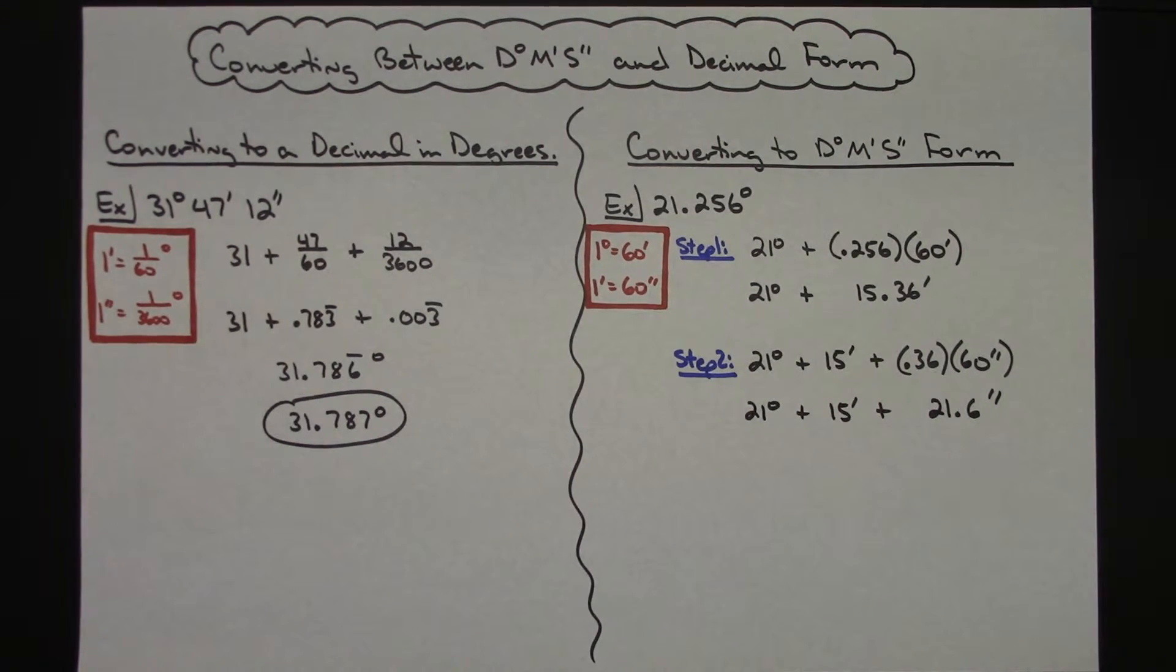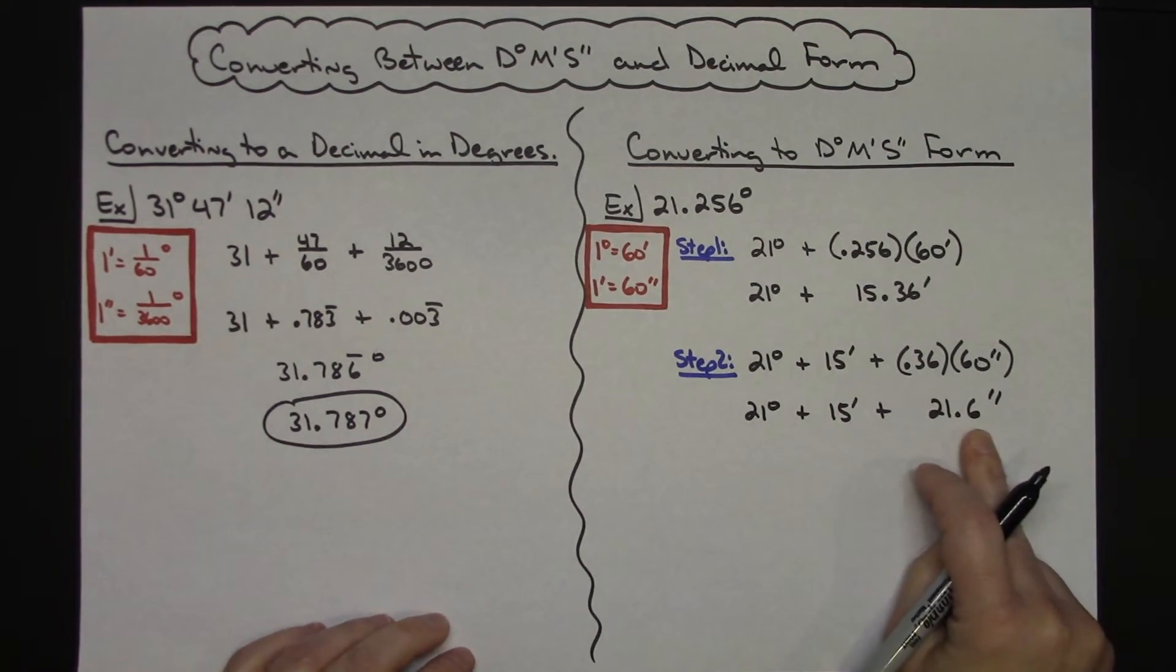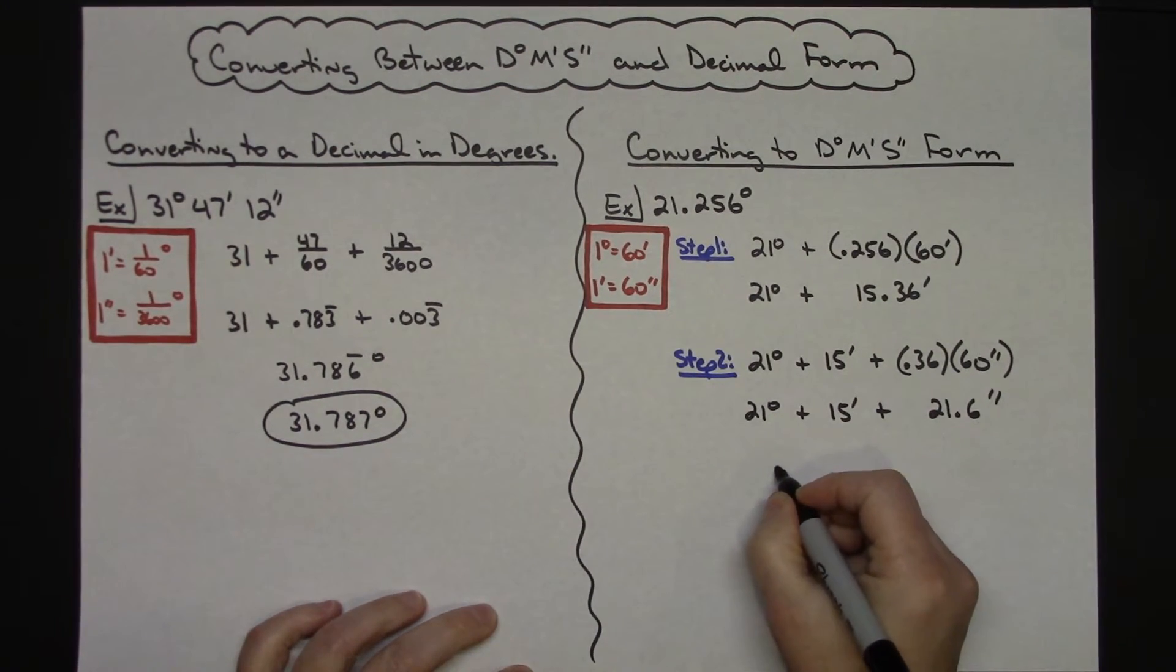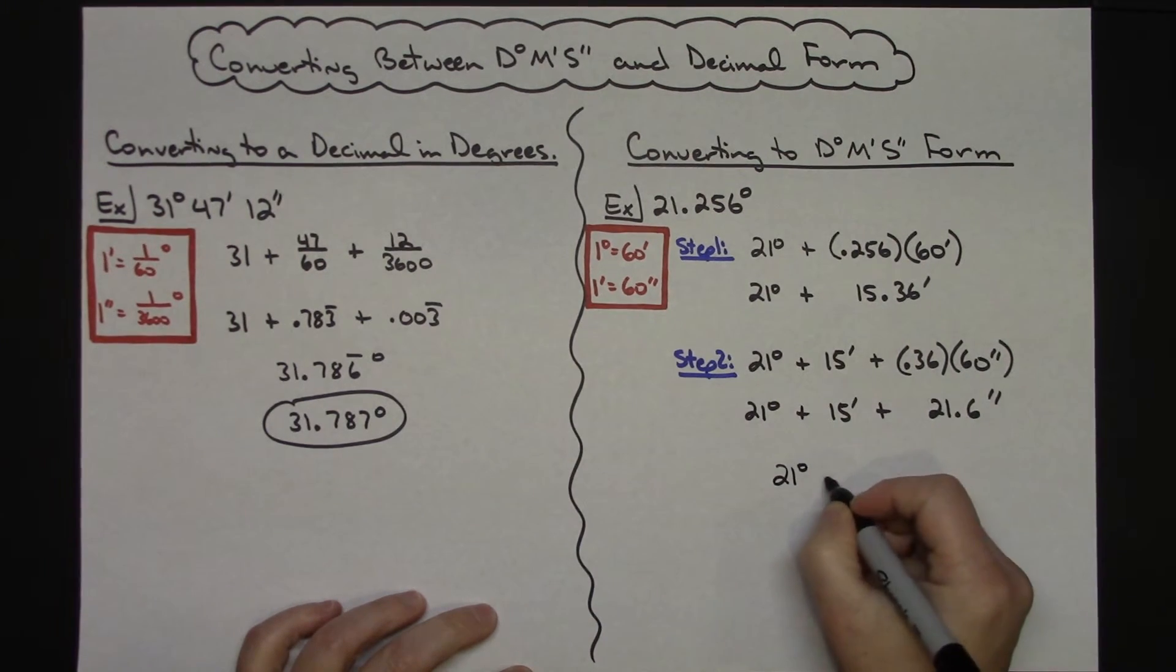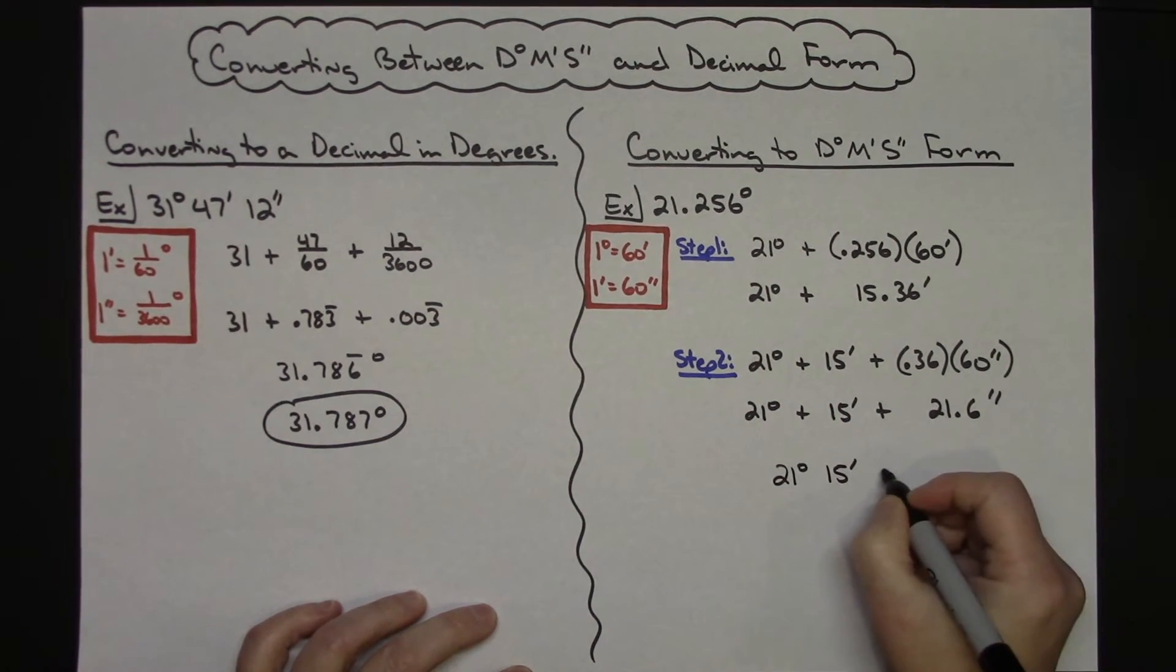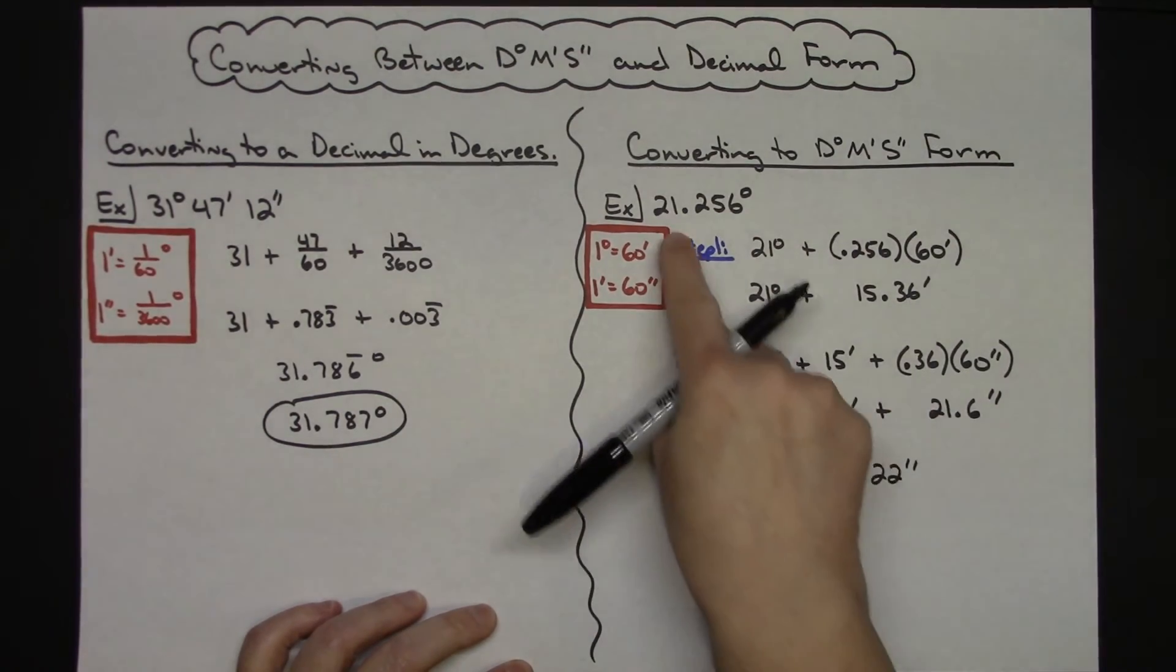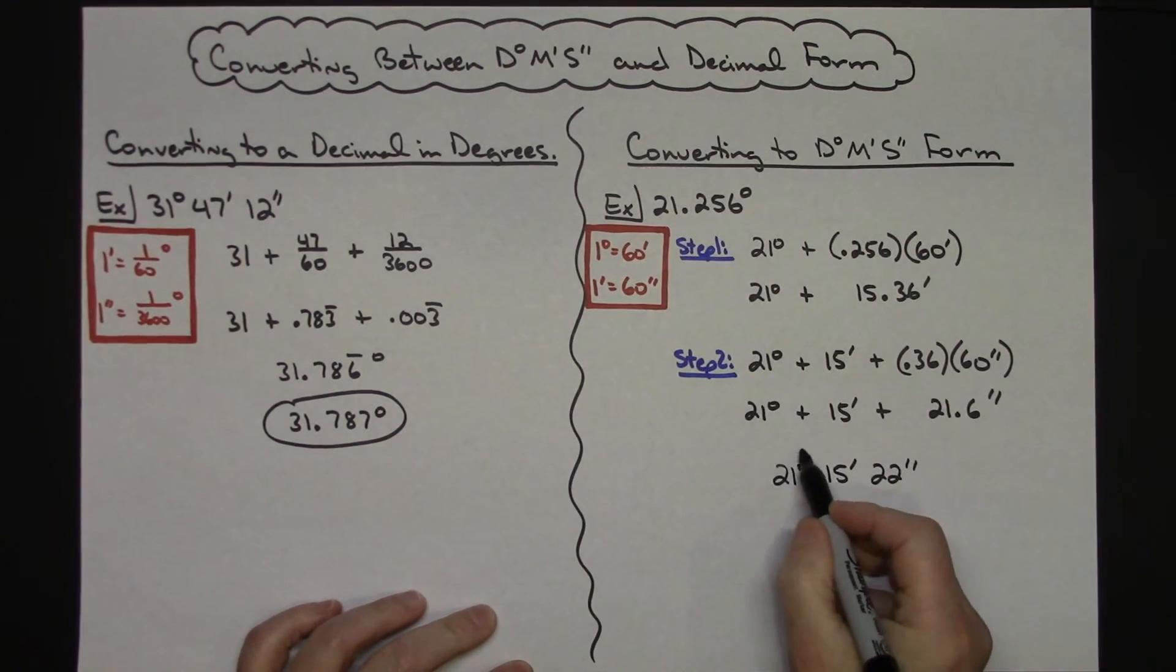And generally at that point since we're done I generally just have kids round this to the nearest whole second there. So then my final answer is 21 degrees, 15 minutes, 22 seconds. And notice I did take the plus signs out because when we write in that form there are no plus signs or anything.